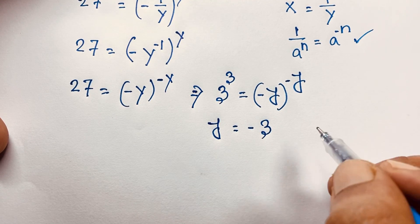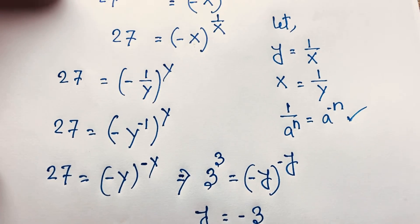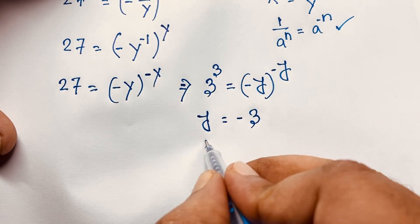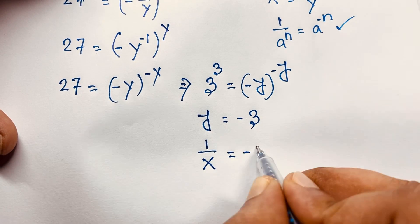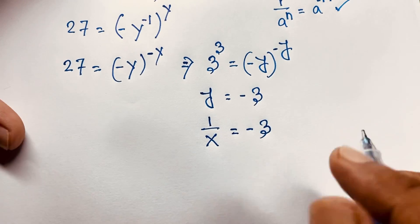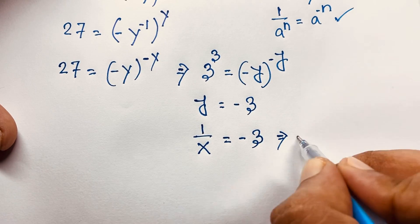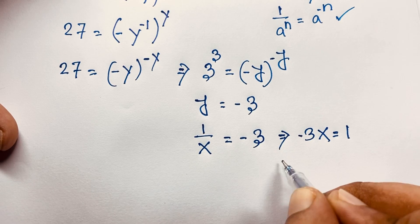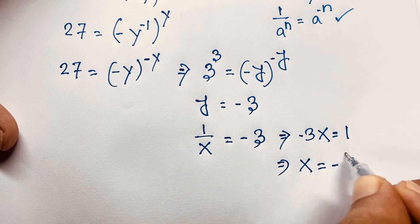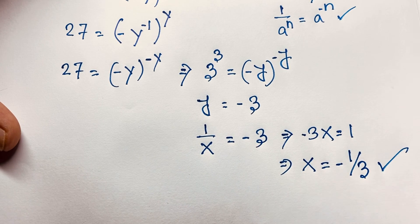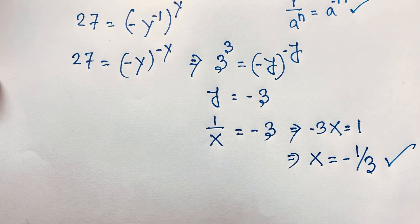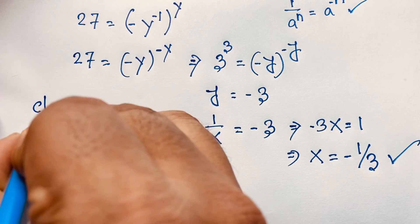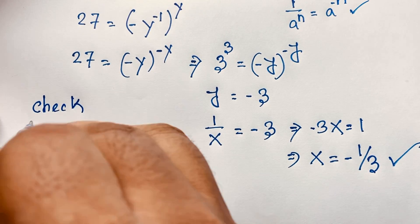We found y equals negative 3. Recalling that y equals 1 over x, substituting gives us 1 over x equals negative 3. Cross-multiplying, 3 times x equals negative 3 times 1, giving 3x equals negative 3. Dividing both sides by negative 3, we find x equals negative 1 over 3. This is our final answer.